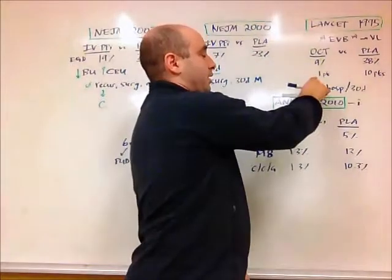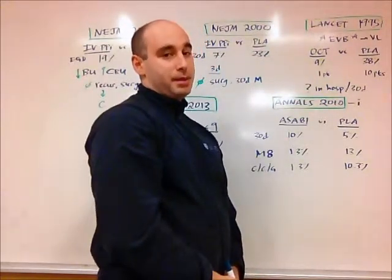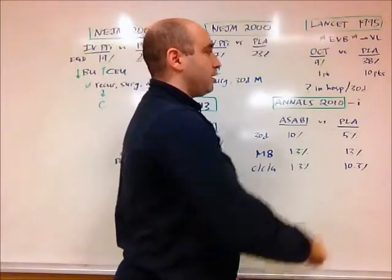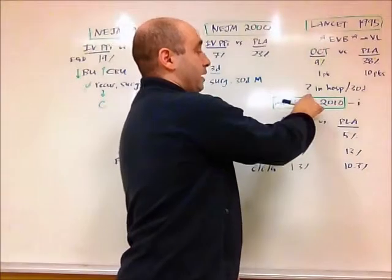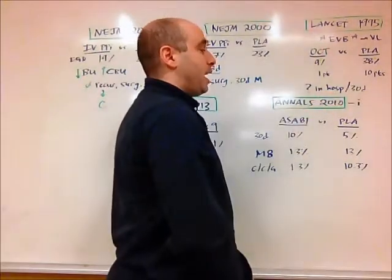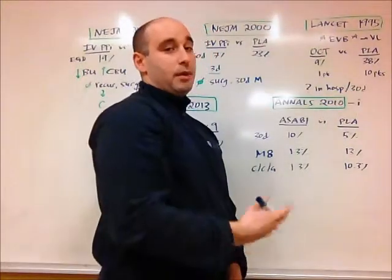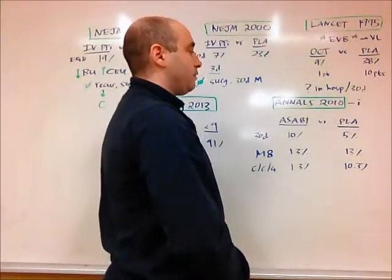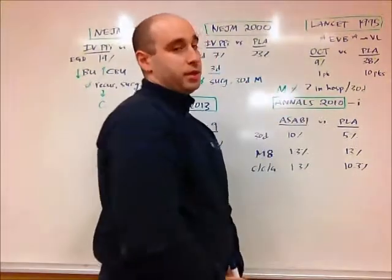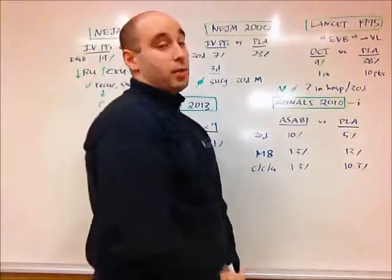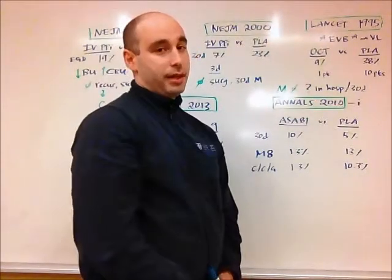They also found that in the octreotide group, only one patient needed balloon tamponade for massive hematemesis and hemodynamic instability, whereas 10 patients in the placebo group required balloon tamponade. The study showed a trend towards reduction in in-hospital mortality and reduction in 30-day mortality in the octreotide group, but wasn't powered enough to fully confirm this. A subsequent meta-analysis that looked at this very question showed no difference between the two groups. But this is why we use octreotide infusion in patients who have esophageal variceal bleeding after they get ligation.